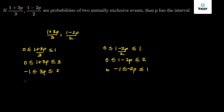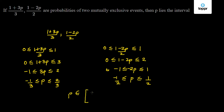Taking the intersection of both conditions, the interval for p where p lies is [-1/3, 1/2].